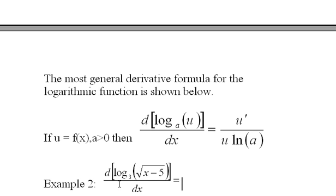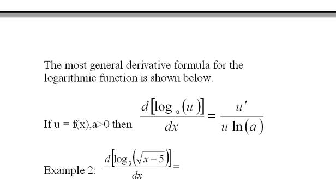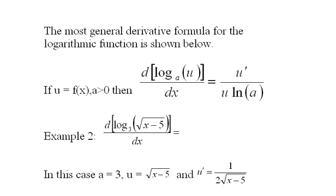In this example, we're going to look at the derivative of log base three of the square root of x minus five. This can be done with logarithmic differentiation, but we'll do it straight by the formula. Here a equals three, u equals the square root of x minus five, and u prime is one over two times the square root of x minus five.